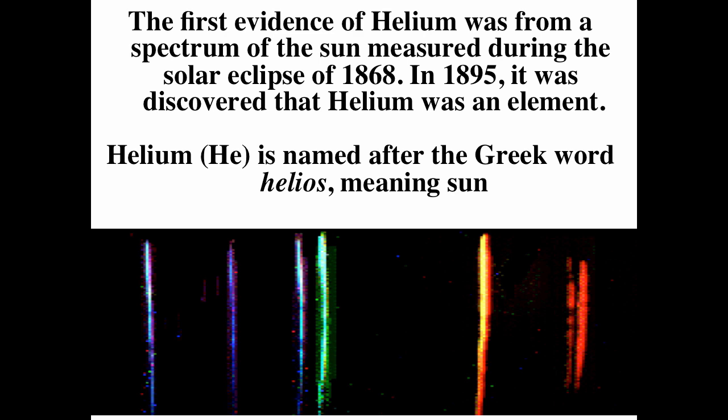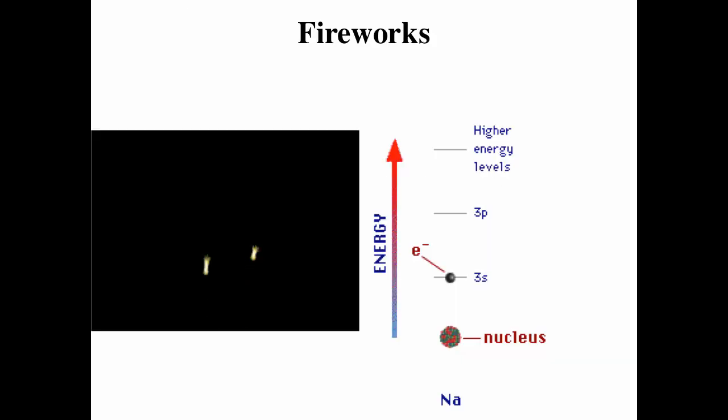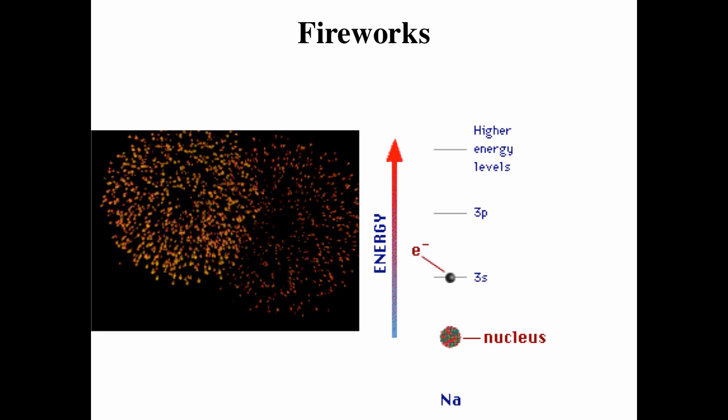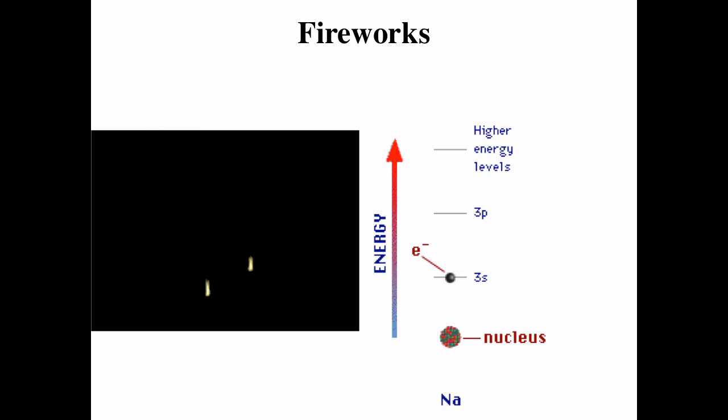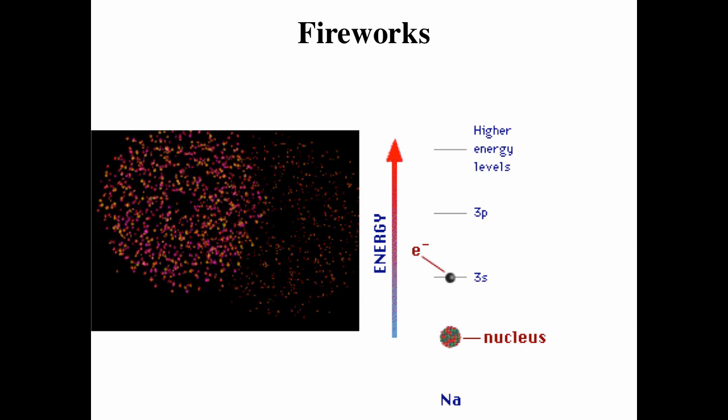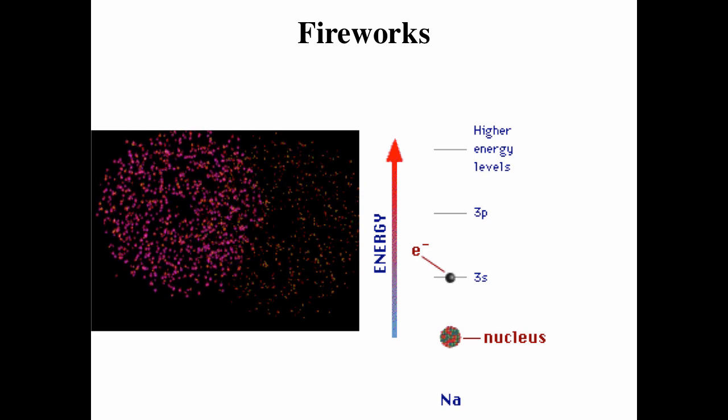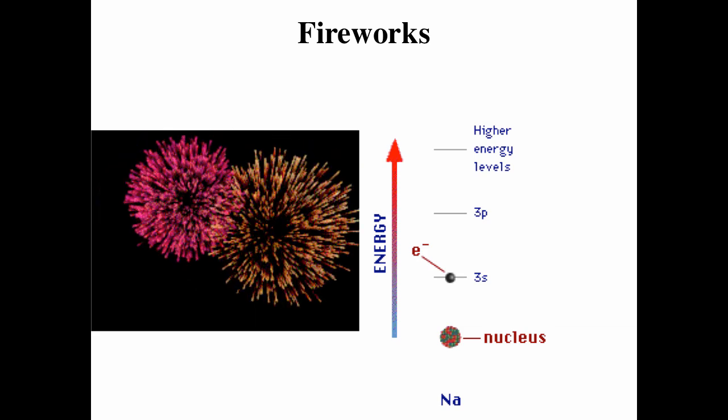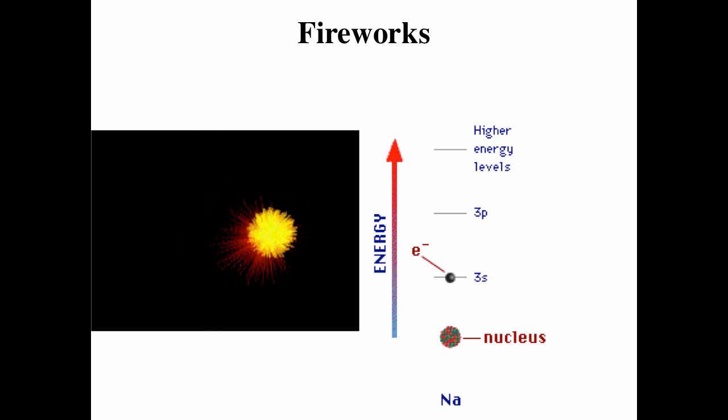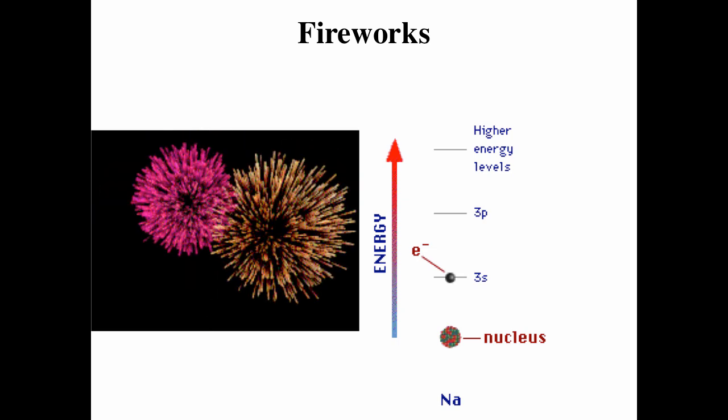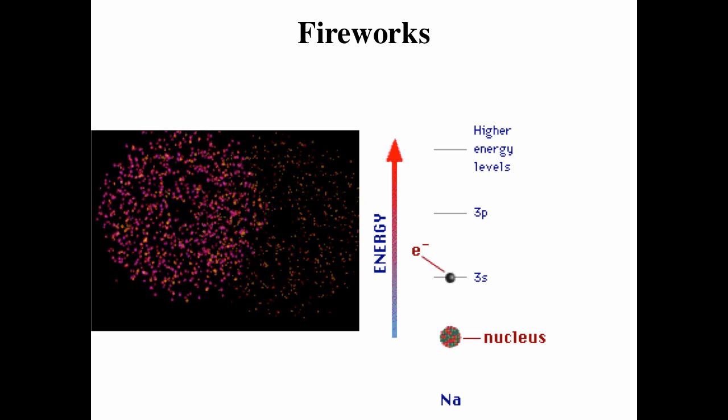Fireworks use the same idea as atomic spectroscopy. In fireworks, you're exciting the sample by burning it through combustion and explosion. Once the electrons are excited, they fall back down. When they relax to a lower energy state, they release a photon with energy equal to the difference in energy. Different colors of fireworks are due to different elements.